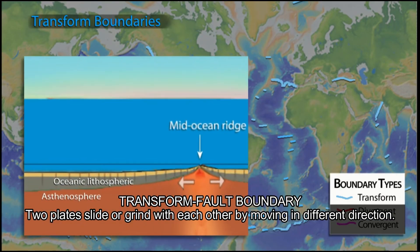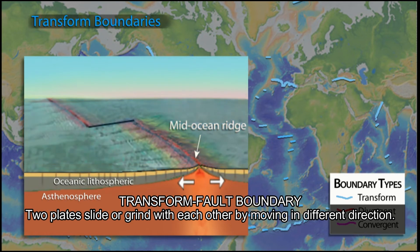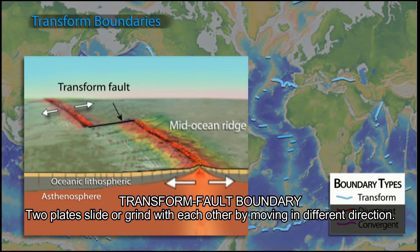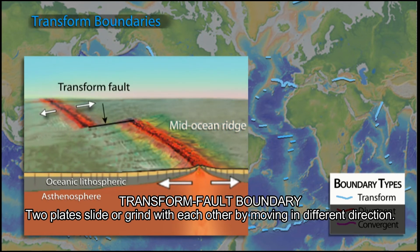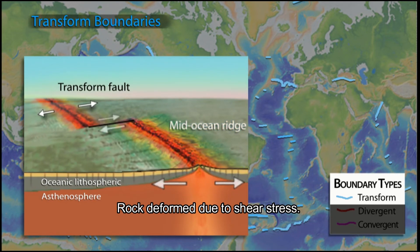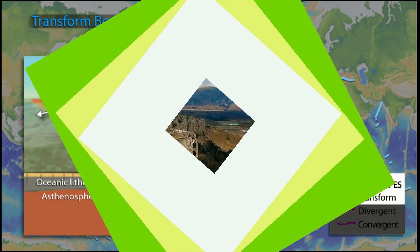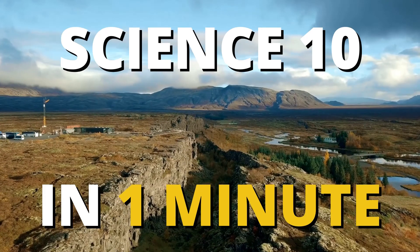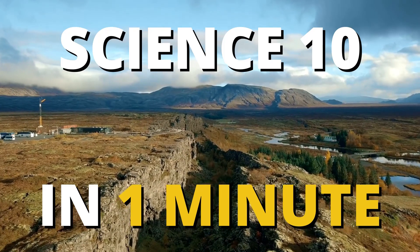Transform fault boundary: two plates slide or grind with each other by moving in different directions. Rock deforms due to shear stress. This is Tutor Rainier and this is Science 10 in 1 Minute.